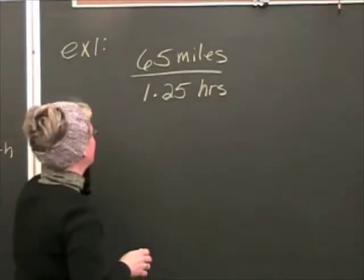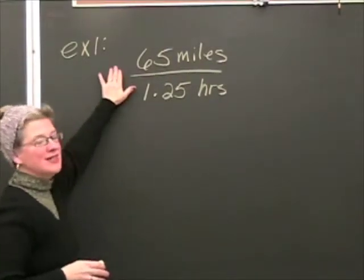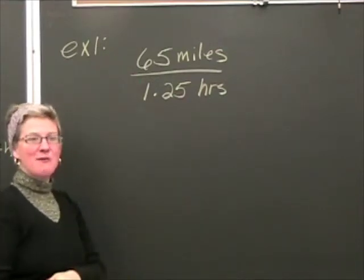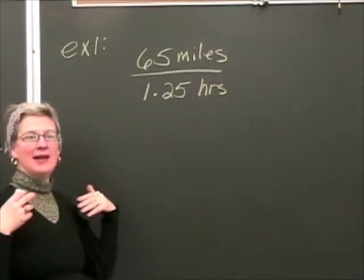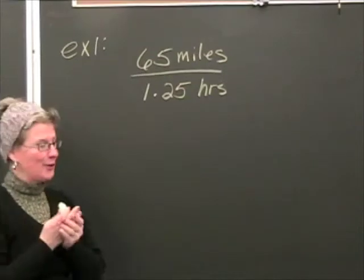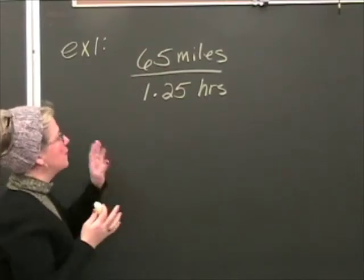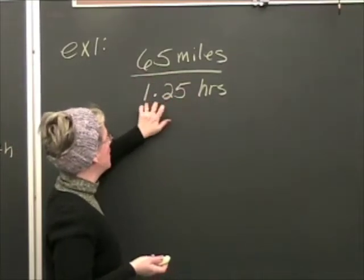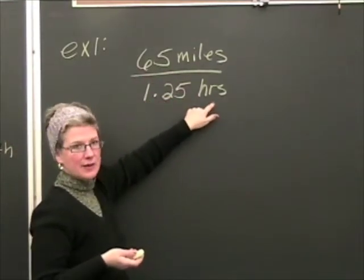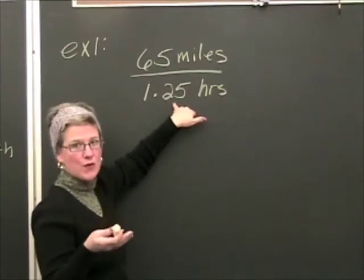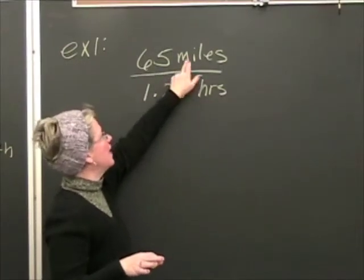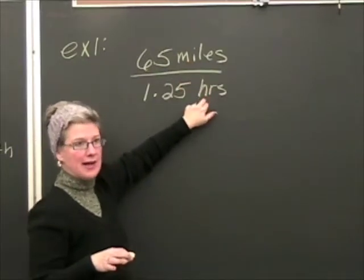Here's an example for you. Let's say I'm traveling to the Apple store and it's 65 miles to get there and it takes me an hour and 15 minutes to get there. The rate that describes the situation is 65 miles to 1.25 hours, because 0.25 is one fourth and 15 minutes is a quarter of an hour. So we've got two different units, miles compared to hours.